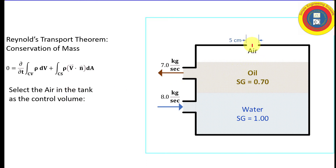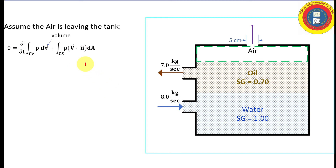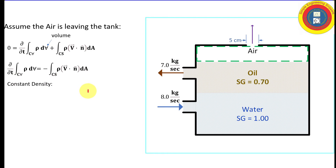We're looking for whether the mass flow rate of air is going into or out of the tank and want to calculate that value. Let's select the air as our control volume and apply Reynolds Transport Theorem. As a first cut, let's assume the mass flow rate of air is actually leaving the tank — if we return a negative value, that means air is entering. Notice the symbol used for volume to distinguish it from velocity. Since density is constant, these integrals simplify nicely, and we assume air is leaving the tank.